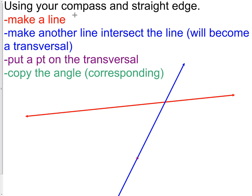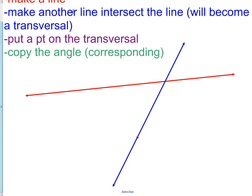Next, using our compass, we're going to make a line. Done that with our straight edge. Make another line intersected. We can do that with our straight edge. That will be called our transversal, the blue line. Next, we're going to copy an angle.